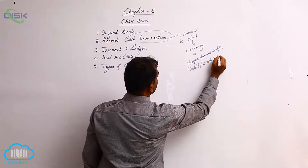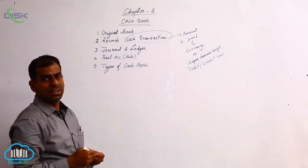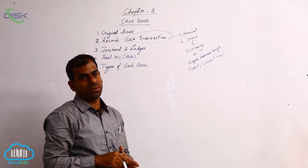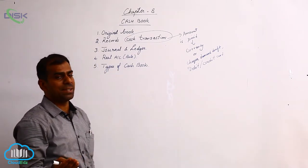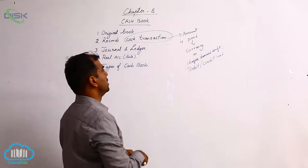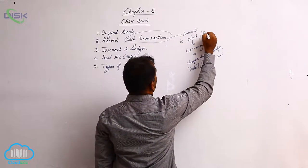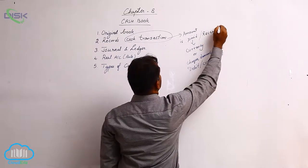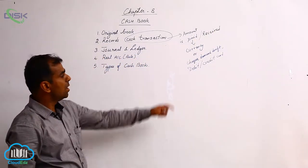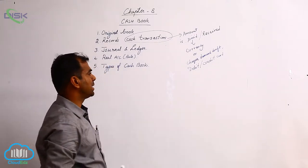You can also use a credit card. So whenever you are making a payment or receiving an amount, it becomes a cash transaction. The amount is paid or received in the form of currency, check, demand draft, debit card, credit card, etc. We call it a cash transaction.